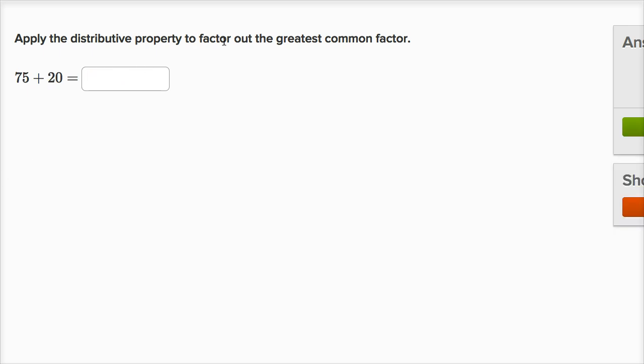Apply the distributive property to factor out the greatest common factor. So let's see if we can just do this one a little bit faster. The largest number divisible in both 75 and 20. I don't know, let me try five.